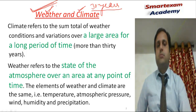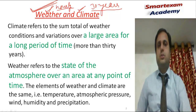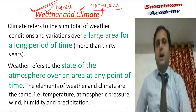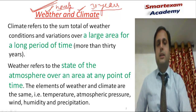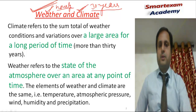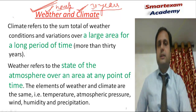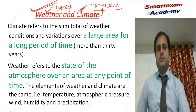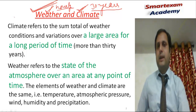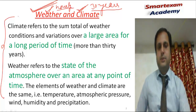Weather is a day-to-day or, in some cases, hourly basis changing atmospheric condition of a small area. Climate is the atmospheric condition of a large area for a long period of time. I hope you are able to understand the difference between weather and climate. You can write down the main points of the difference between the two.